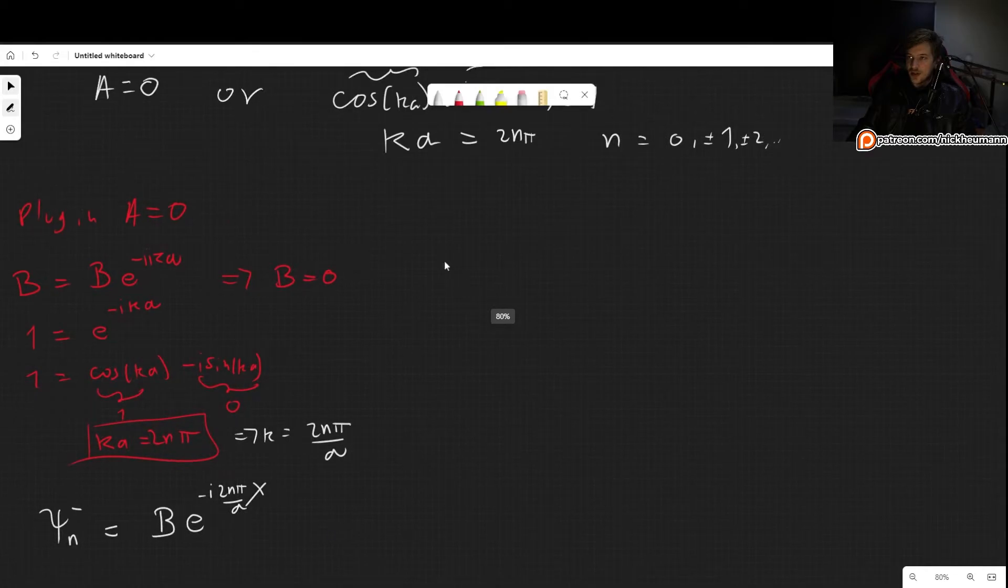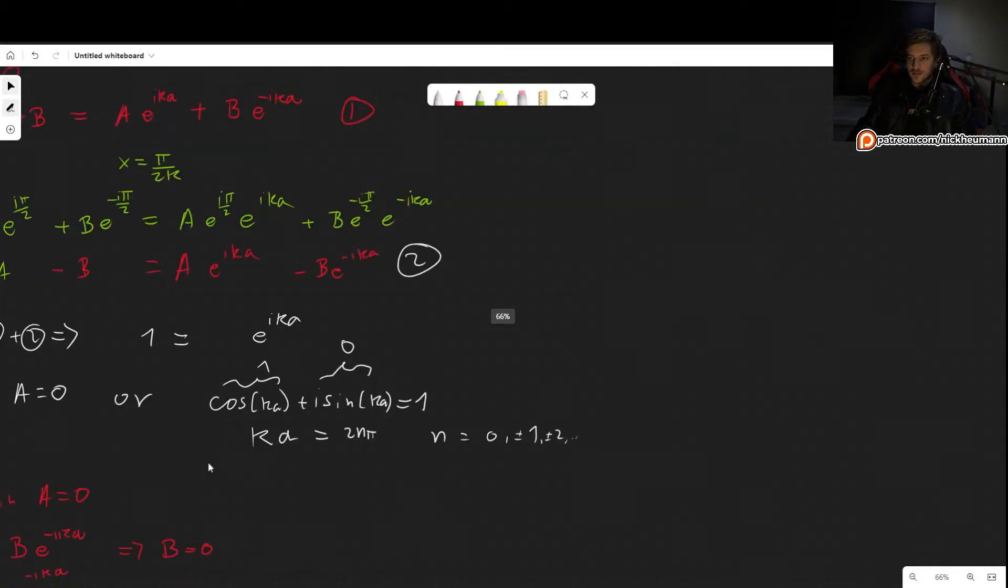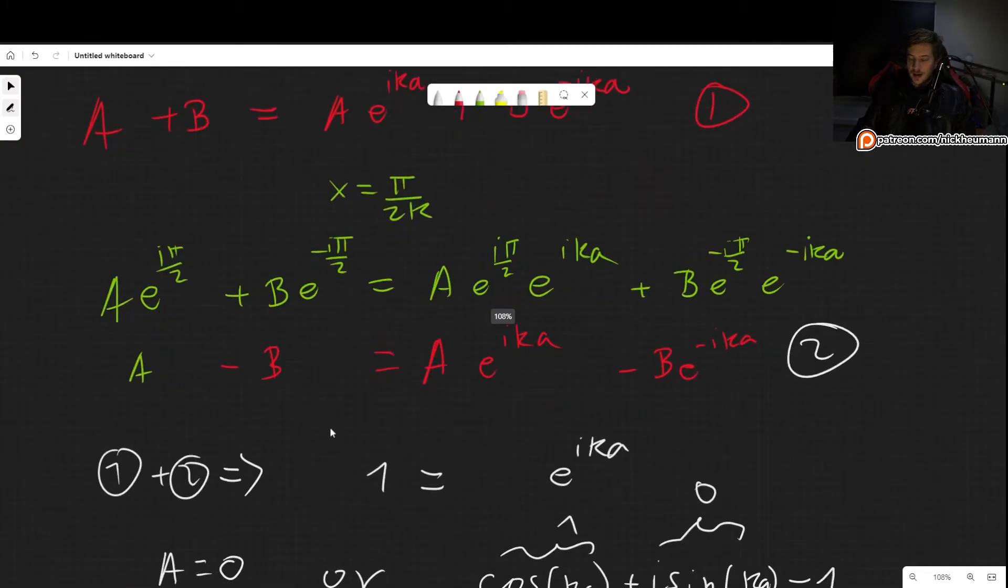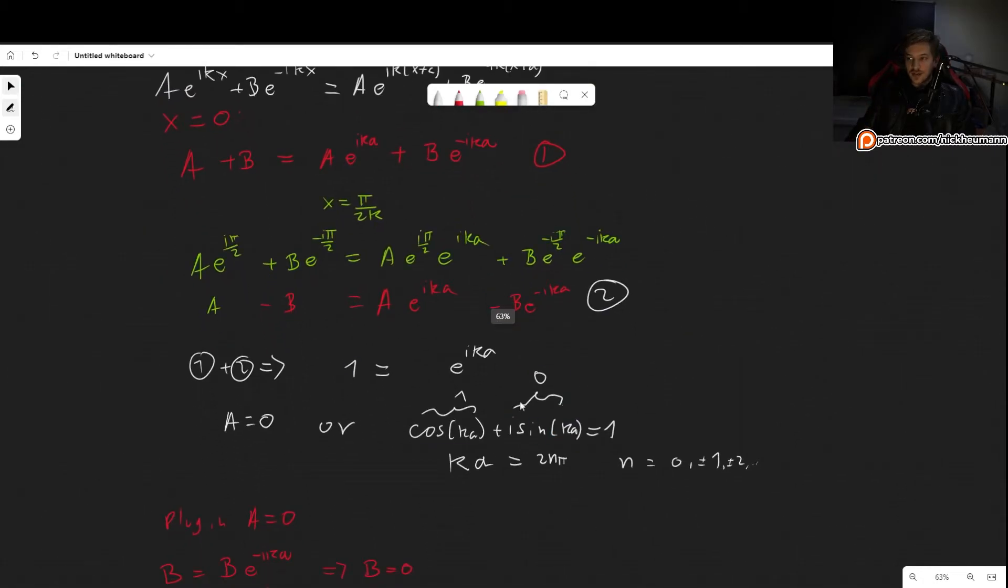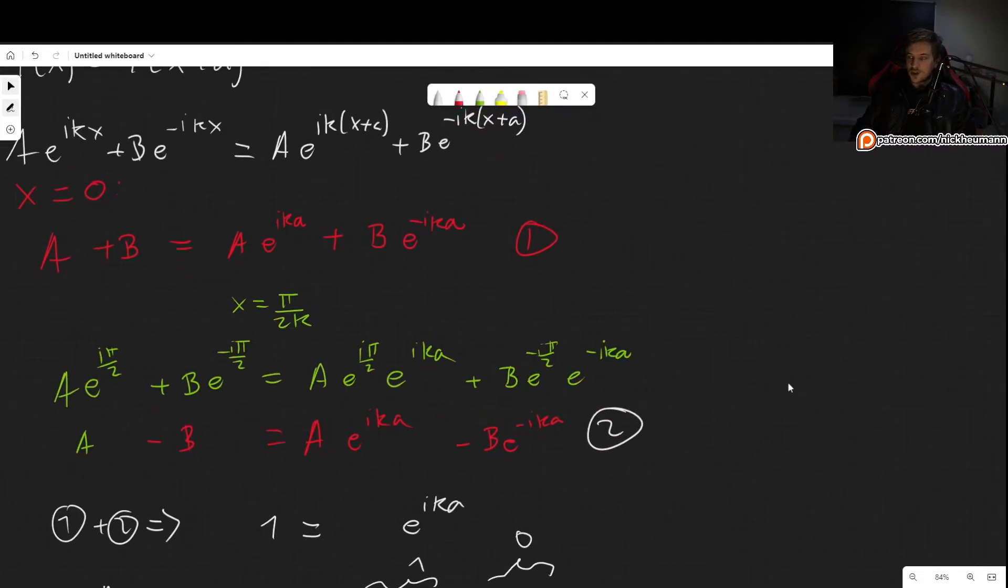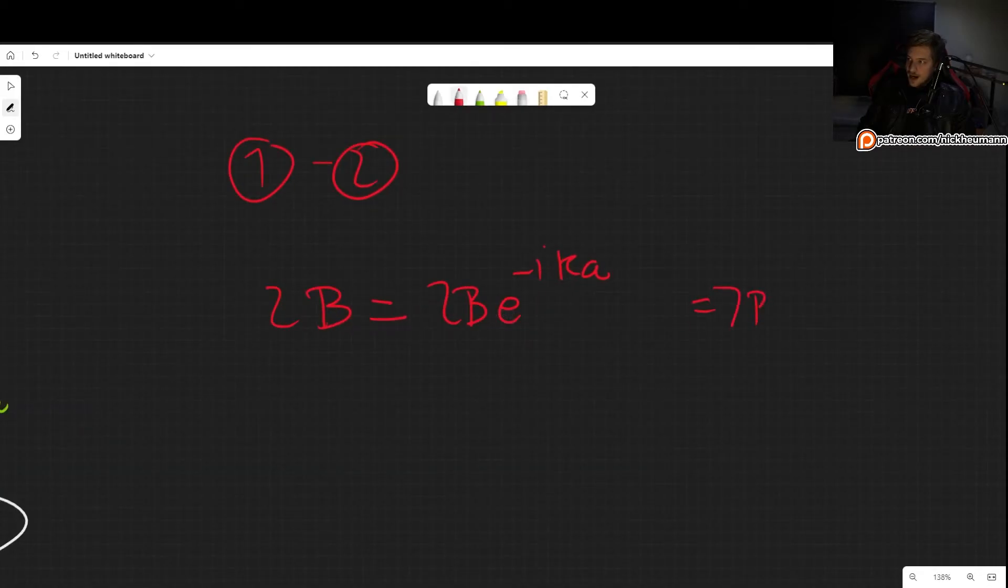Now let's take a look at the other case, because we just saw the case A equals 0. We could actually from this derive it, but I just want to make sure that this is as clear as possible. So now, instead of adding 1 and 2, we could subtract 1 and 2. So by doing that, the A's cancel out, and now we get 2B equals 2Be^(-ika). And from here, we will find what we already saw, that either B equals 0, or that ka has to equal 2nπ. And this is the same as before.